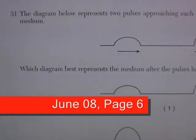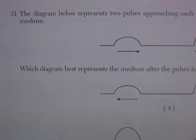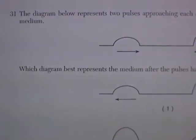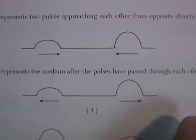We are on the June Audit Exam. We're up to page 6, question 31. The diagram below represents two pulses approaching each other from opposite directions in the same medium.